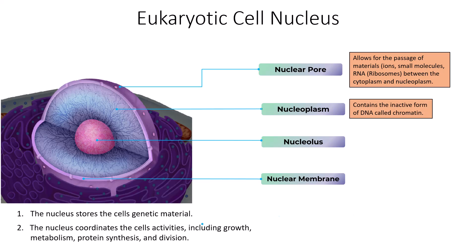The nucleoplasm is the fluid that contains the inactive form of DNA called chromatin. Chromatin are these long stringy strands of DNA, which is an inactive form of DNA. DNA is going to super coil into chromosomes during times of active cell division, which would be the active form of DNA. But when DNA is inactive, it is in the form of chromatin.